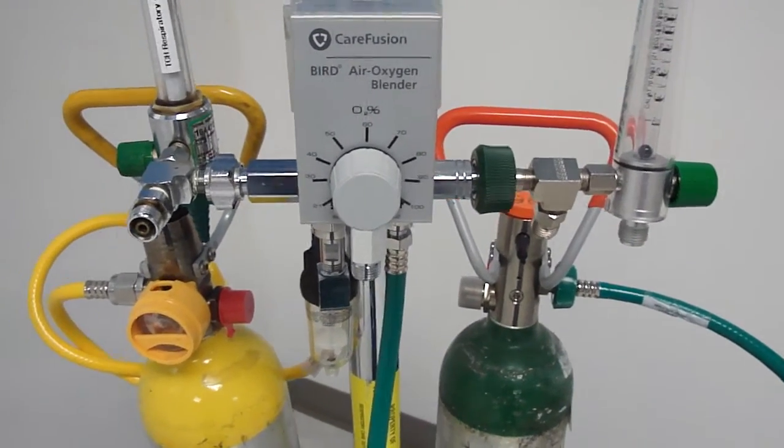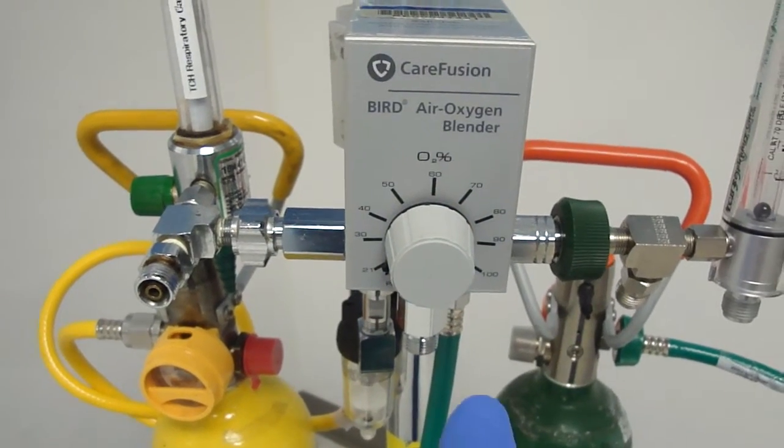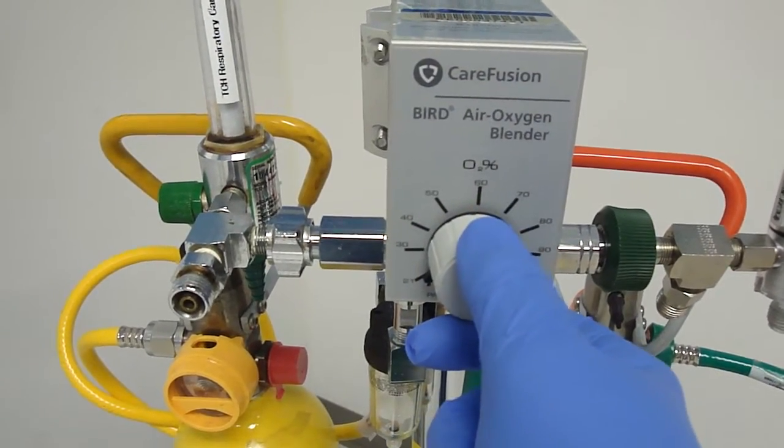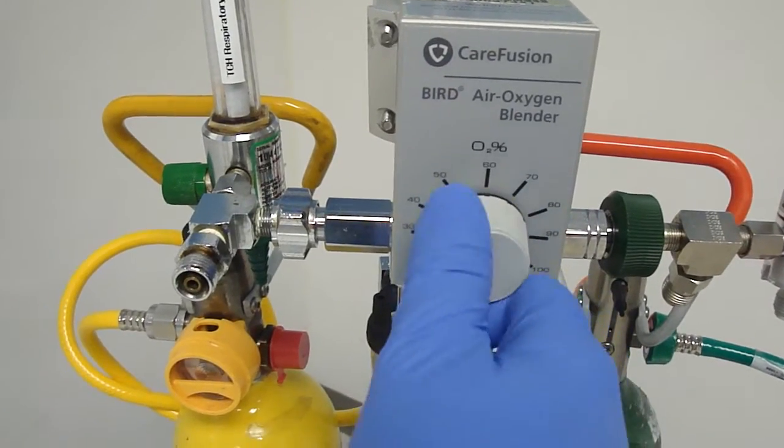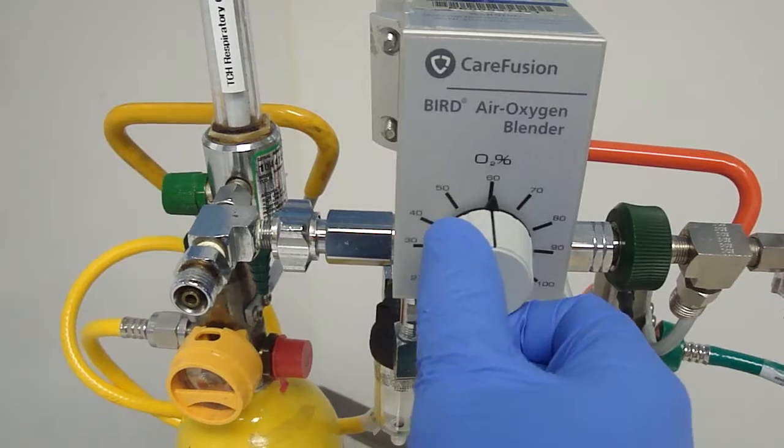Once the hoses are connected, you'll be able to titrate your FiO2 with your blender. 21% is all the way to the left, all the way to the right is 100%, and you can titrate anywhere in between.